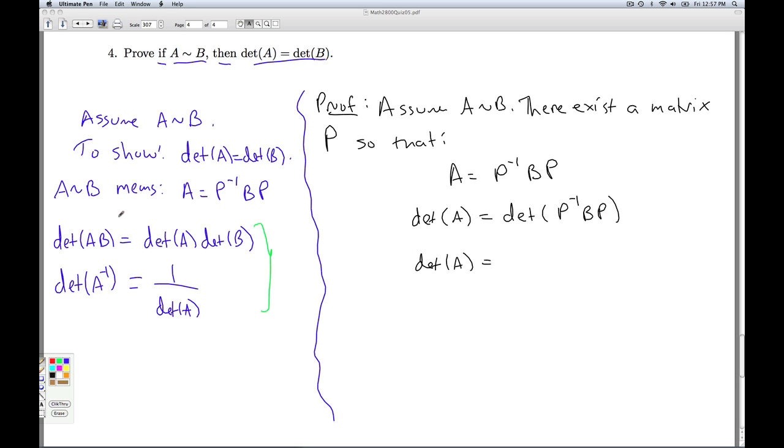The determinant of a product of matrices is the product of their determinant. Now this property says I can break it up for two factors. Well, you can use induction to show then you can break it up over as many factors as you want. I just have to group two at a time. So by repeated application of that property, I get this.